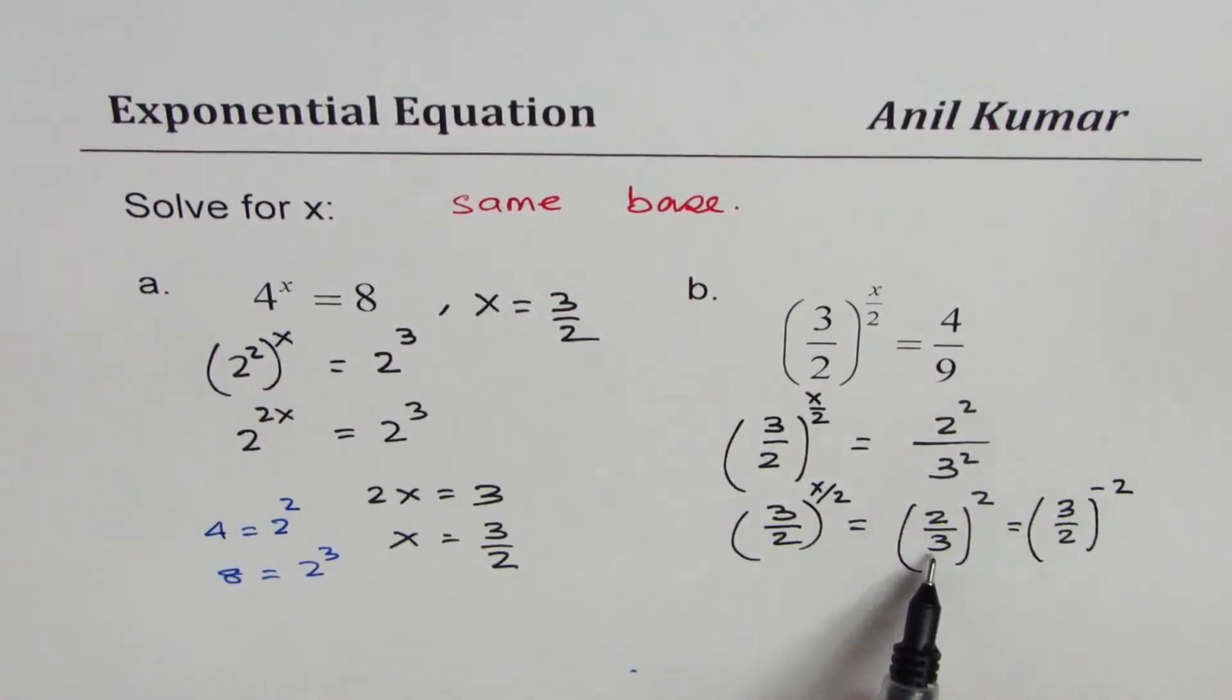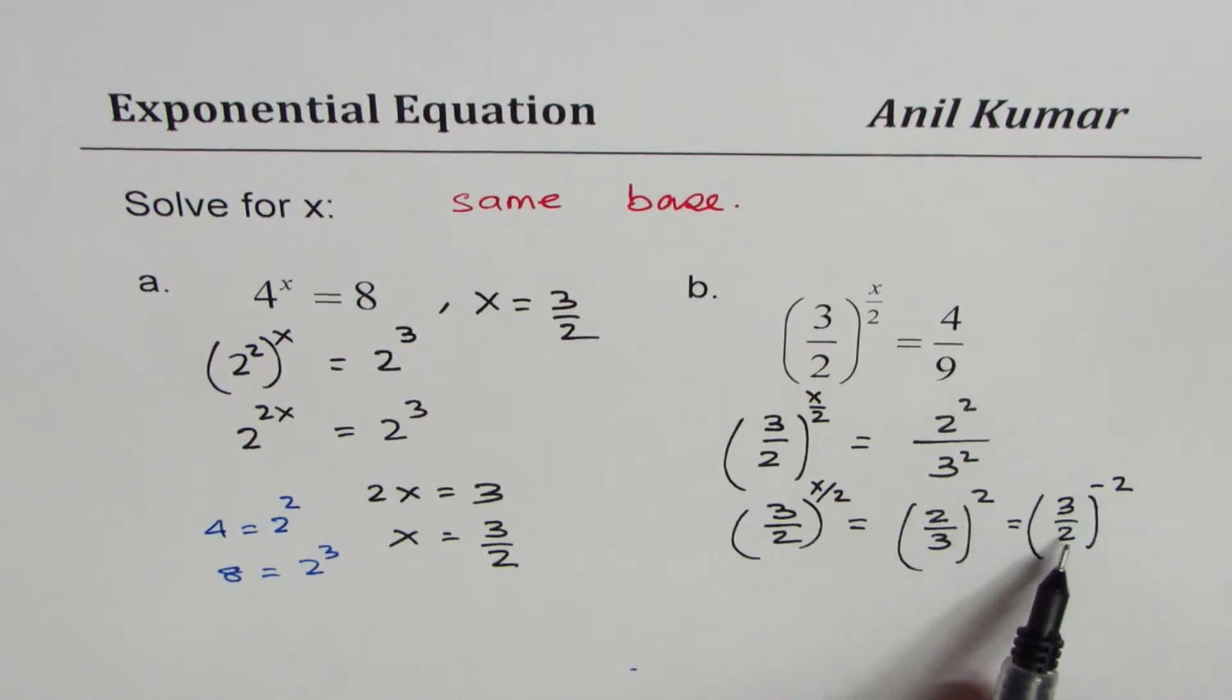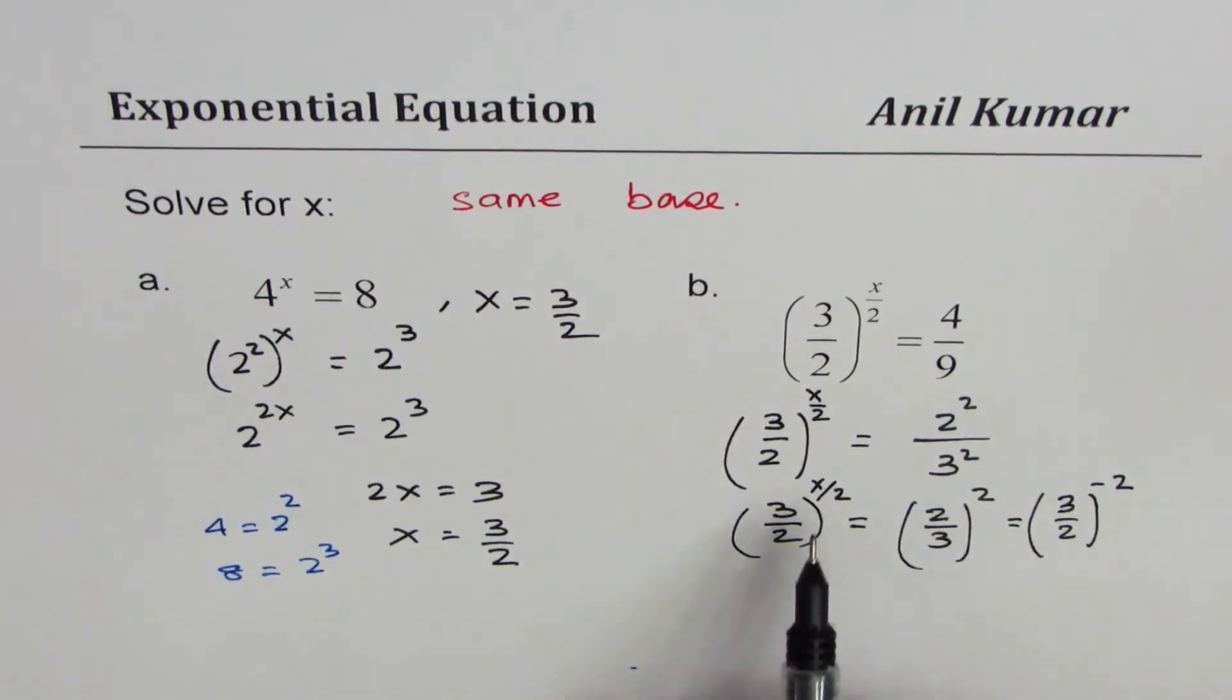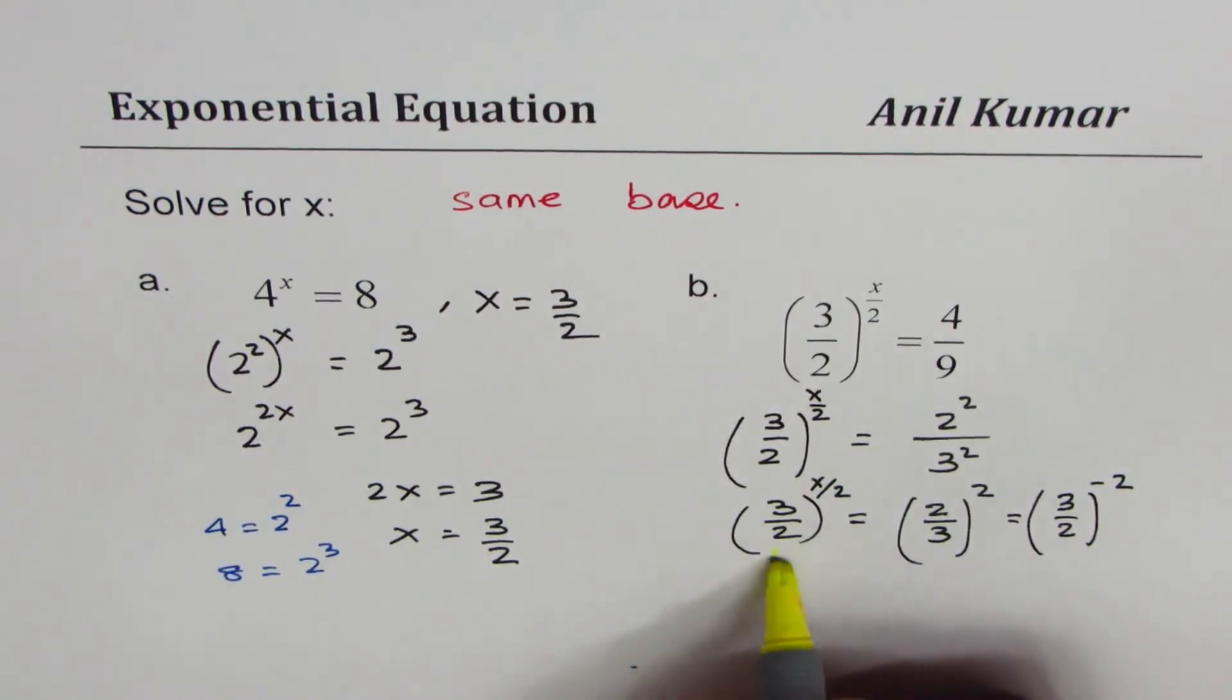So (2/3)^2 is the same as (3/2)^(-2). Now we can compare the exponents since now we have the same base, 3/2.